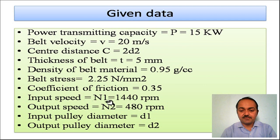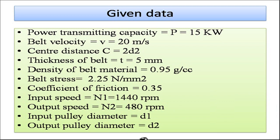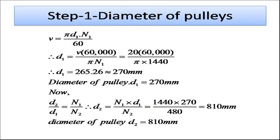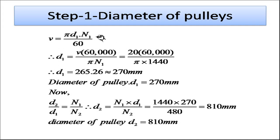We mark all given data: belt thickness, density of material, belt stress, coefficient of friction. Input speed n1, output speed n2 is 480 rpm. d1 is the input pulley diameter and d2 is the output pulley diameter. To find the input pulley diameter, we use the velocity equation: v = π·d1·n1 / 60.